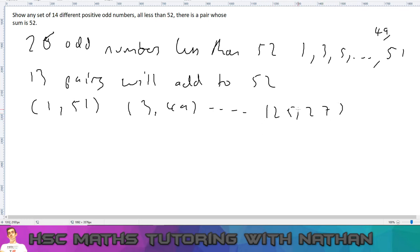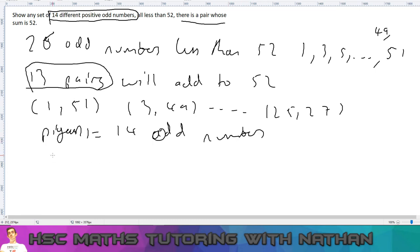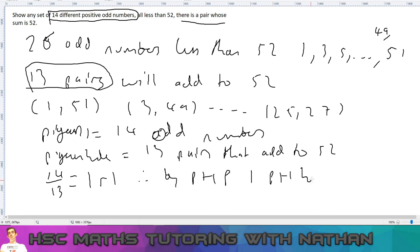So now let's see how does this relate to the pigeonhole principle. Well, here's the thing: by working this out here, look at this—13 pairs, 14 different positive odd numbers. And what we need to show is there is a pair whose sum is 52. So if you think about this, well, what are my pigeonholes? So my pigeons are the 14 odd numbers, and the pigeonhole is the 13 pairs that add to 52. So if you think about this, pigeonhole principle: if we do 14 divided by 13—so remember, pigeons divided by pigeonhole—we get 1 remainder 1. So therefore, by pigeonhole principle, 1 pigeonhole has at least 2 pigeons.